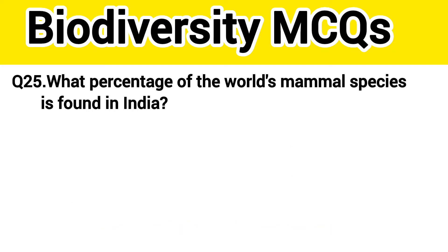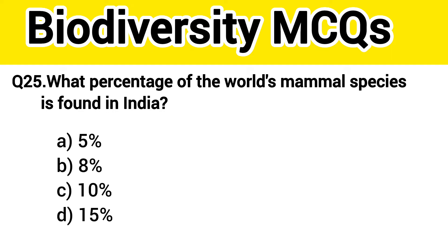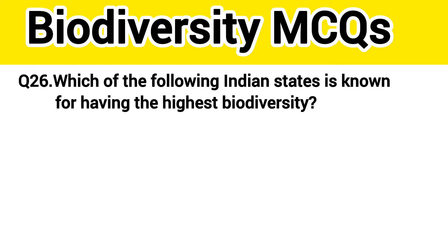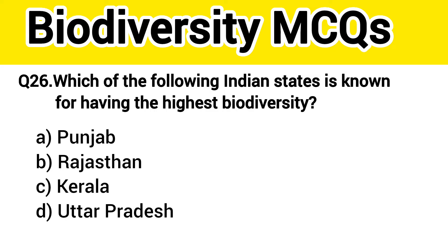Question number 26. What percentage of the world's mammal species is found in India? Question number 27. Which of the following Indian states is known for having the highest biodiversity? The right answer, option C: Kerala.